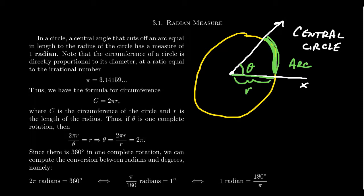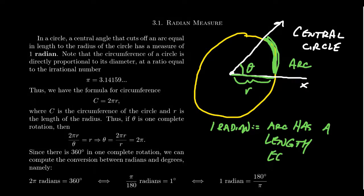And so one radian—this is what one radian means here: that the arc has a length equal to the radius of the circle R.